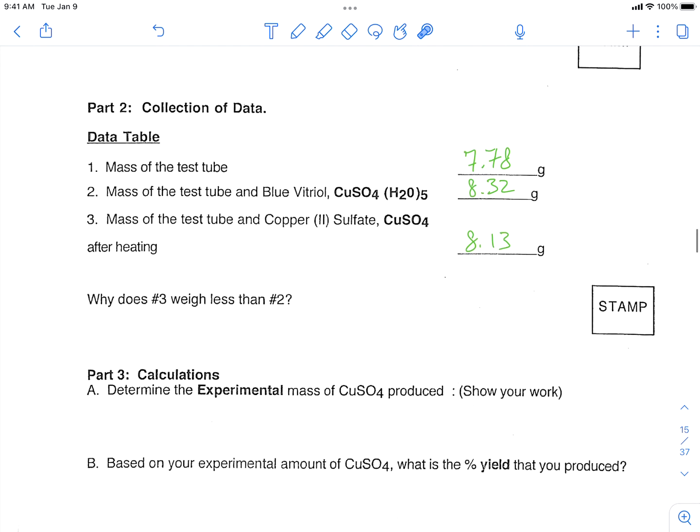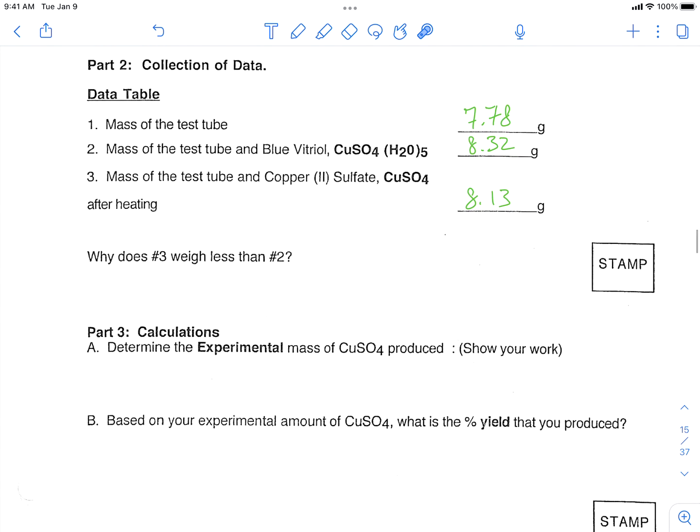First thing we're going to do, we can answer the question, why does number three weigh less than number two? We cooked off all that water. So we basically lost water when we heated it, and that's the basic idea there.